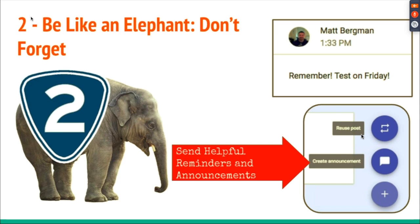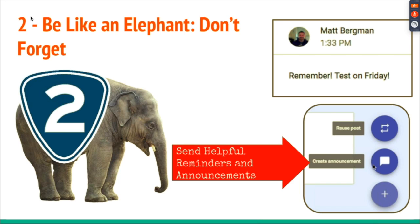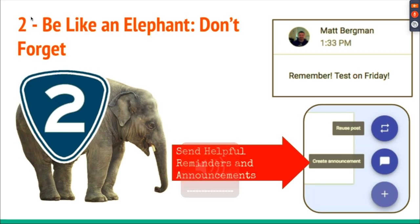Just go to the Stream tab and click right here to create an announcement. You can even schedule these announcements as well. So if you know that at the very beginning of the week you're talking to your kids and you want an announcement on Friday, you can have it posted on Thursday evening at 6 o'clock by just creating an announcement and posting that.